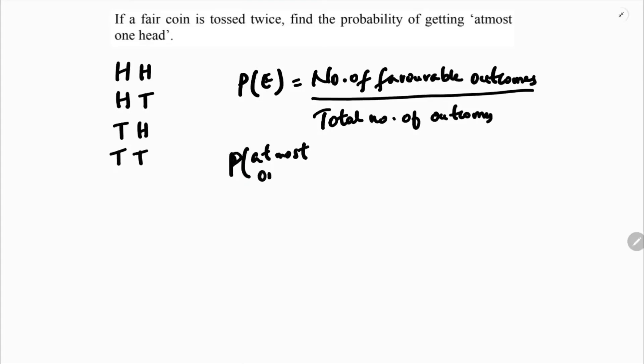So probability of at most one head. The total number of outcomes is four. Now what does 'at most' mean?